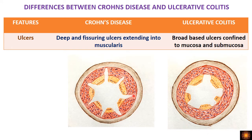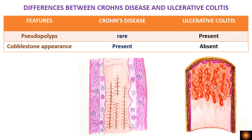Regarding ulcers, in Crohn's disease we see fissuring ulcers that involve the mucosa, submucosa, and even the muscularis. In ulcerative colitis, we have broad-based ulcers that involve only the mucosa and submucosa — there is no involvement of the muscularis. So in Crohn's we have fissuring ulcers, while in ulcerative colitis we have broad-based superficial ulcers.